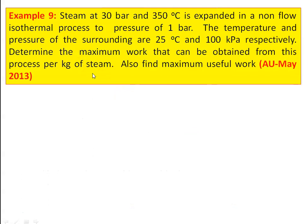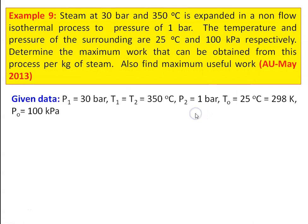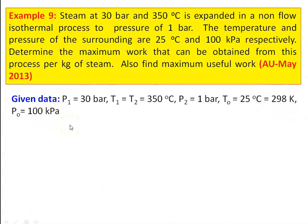Example number 9, from the university question paper May 2013: steam at 30 bar and 350 degree Celsius expands in a non-flow isothermal process to a pressure of 1 bar. The temperature and pressure of the surroundings are 25 degree Celsius and 100 kilo Pascal respectively. Determine the maximum work and maximum useful work per kg of steam. Given: isothermal process, so T1 equal to T2 equal to 350 degree Celsius, P2 equal to 1 bar, T0 equal to 25 degree Celsius which is 298 Kelvin, surrounding pressure P0 equal to 100 kilo Pascal.